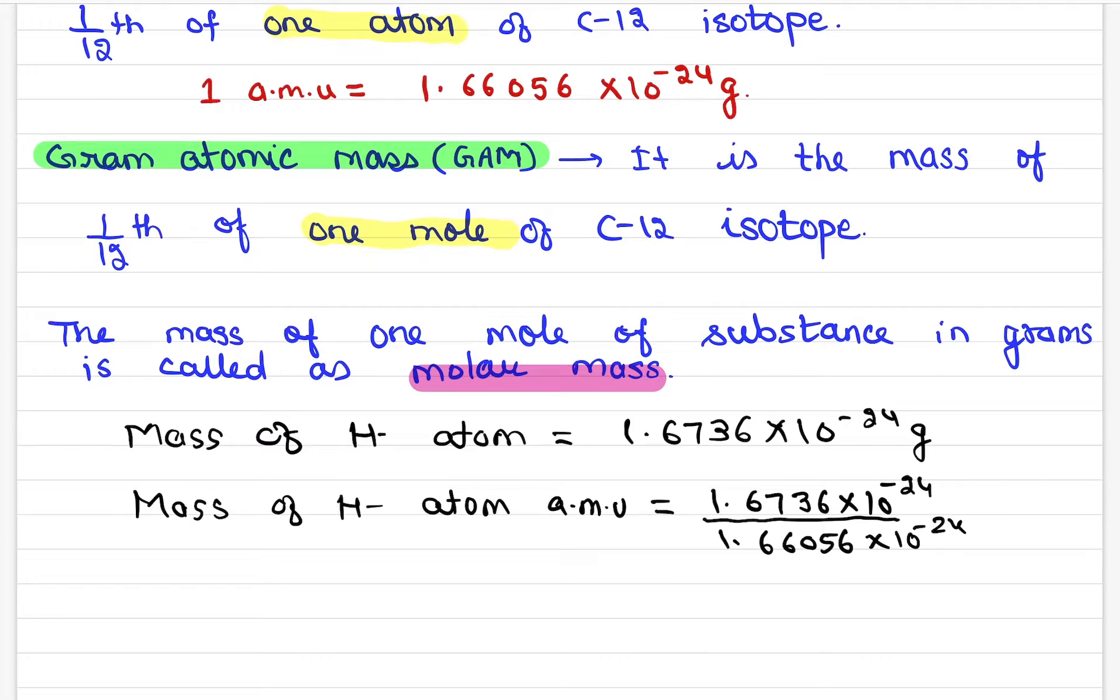And we solve this, our answer is 1.0078 AMU. So, this is what I say to my children. This is James Bond code. So, 1.007 AMU you can remember.